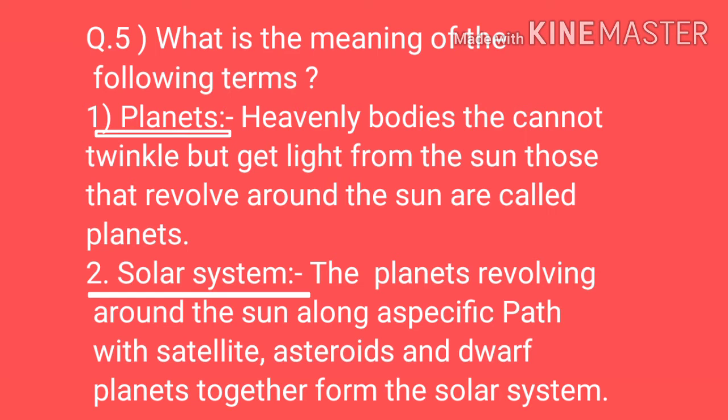Question Number 5 — What is the meaning of the following terms? First, planets: Heavenly bodies that cannot twinkle but get light from the sun and revolve around the sun are called planets. Second, solar system: The planets revolve around the sun in a specific path, together with satellites, asteroids, and dwarf planets — this forms the solar system.